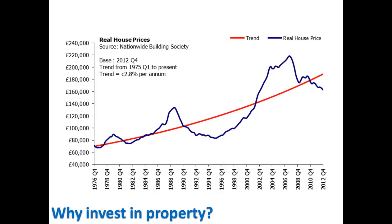In the last video we talked about the fact that house prices increase over a period of time — on average they continue to go up. The red line in this diagram is the average increase in house prices and the blue line is the actual house prices, or what they call the real house prices. As you can see, the real house prices fluctuate above and below the average.